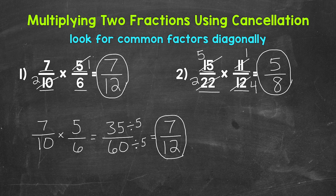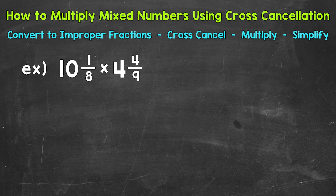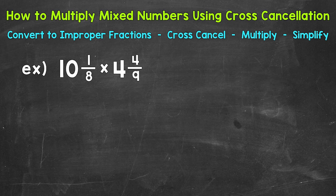There's how to use cancellation when multiplying two fractions. Let's move on to using cancellation when multiplying mixed numbers. Let's jump into our example: 10 and 1 eighth times 4 and 4 ninths. The first thing we need to do is convert these mixed numbers to improper fractions, so we just have a numerator and a denominator.